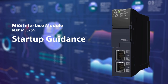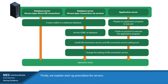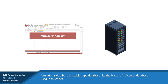Part 3: Set up and configuration of the server. There are two types of servers: database servers and application servers. In this video, a database server, Access type connection via service, will be used. Step 1: Create tables in the relational database. A relational database is a form type database, like the Microsoft Access database used in this video. First, install the relational database Microsoft Access. After installation has been completed, reboot the server.